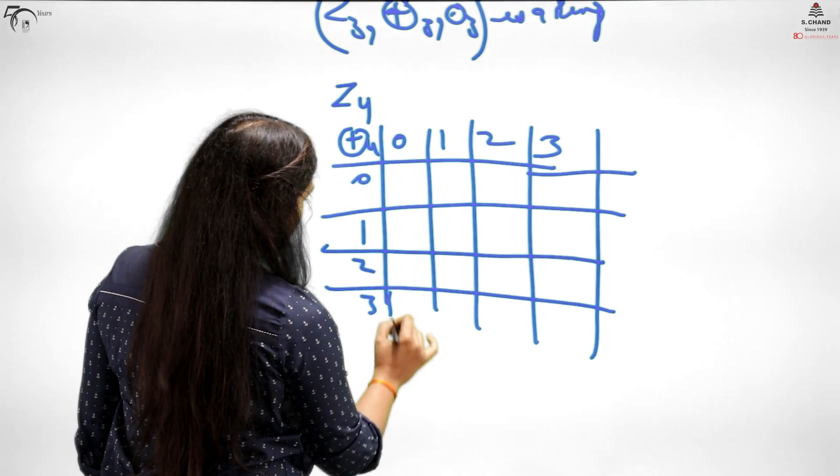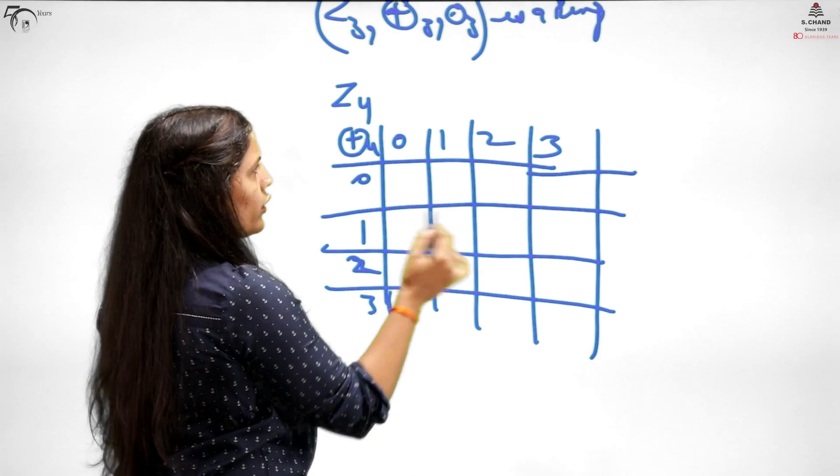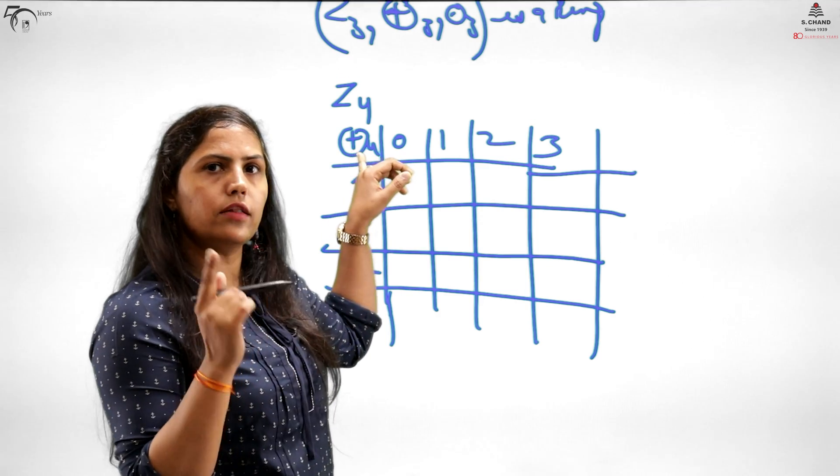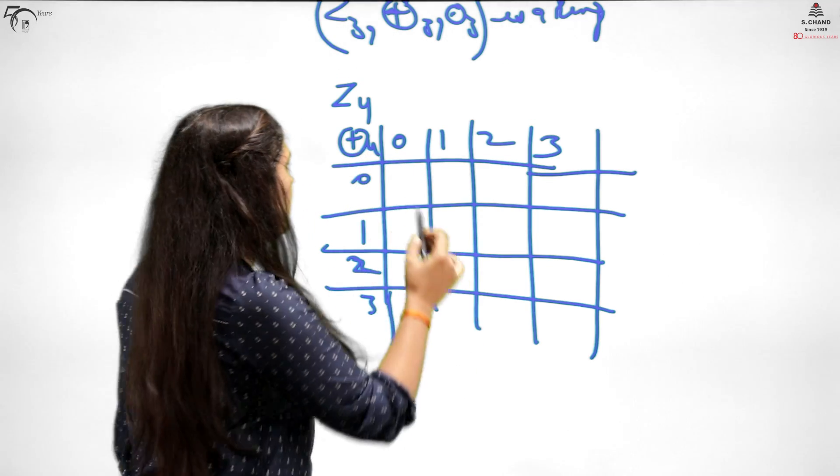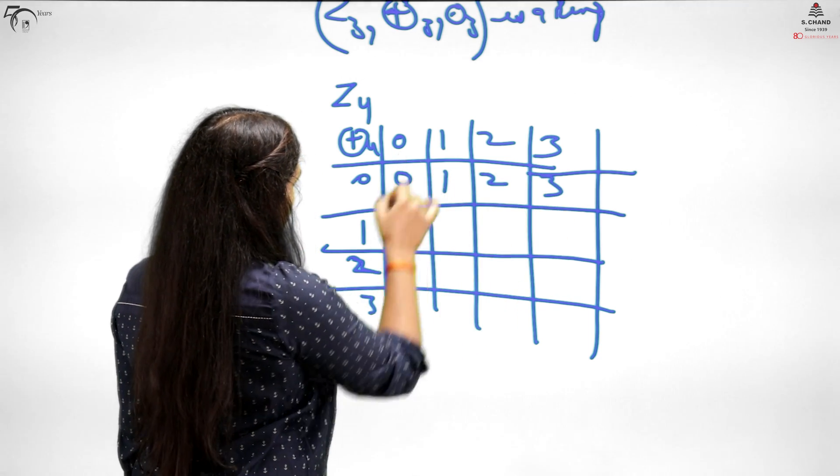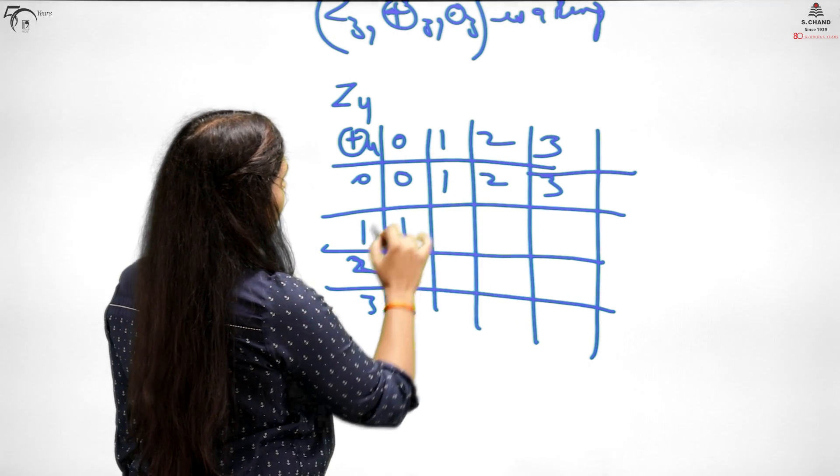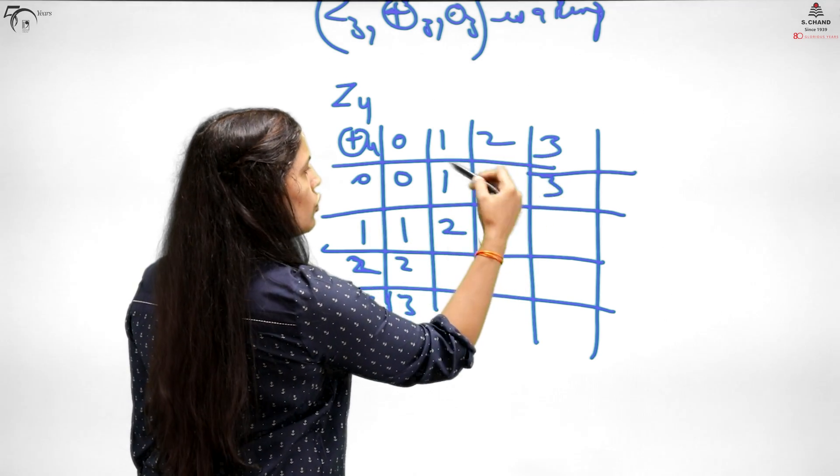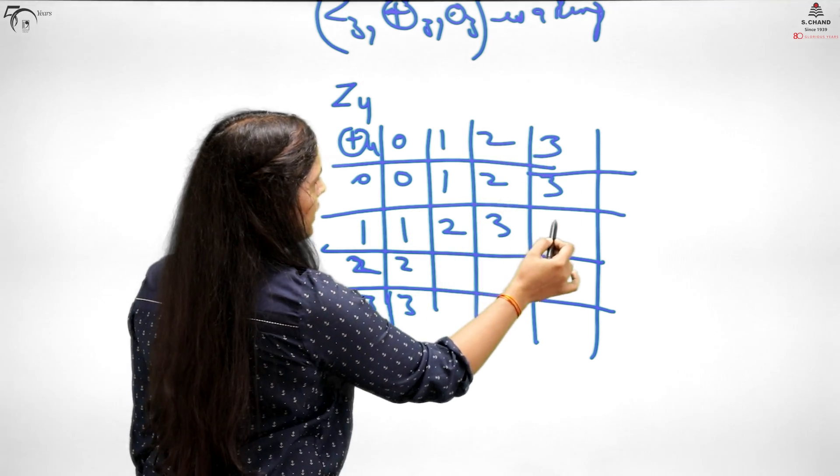Adding and if the sum is more than 4 or equals 4, then consider the remainder. So 0 plus 0 is 0, then 1, 2, 3. Then 1, 2, 3. Now 1 plus 1 is 2, no issues. 1 plus 2 is 3. 1 plus 3 is 4, remainder is 0. Then 2 plus 1 is 3, 2 plus 2 is 4, when you take remainder it gives 0. 2 plus 3 is 5, remainder is 1.